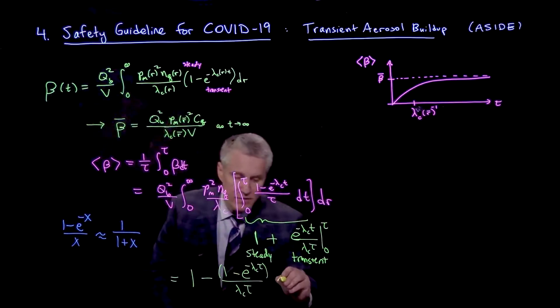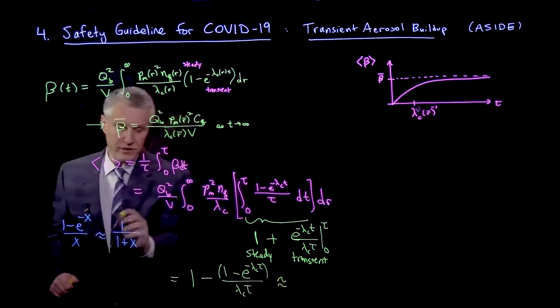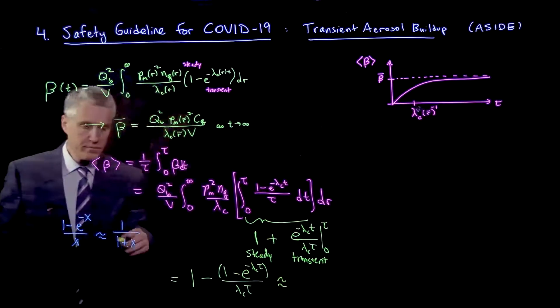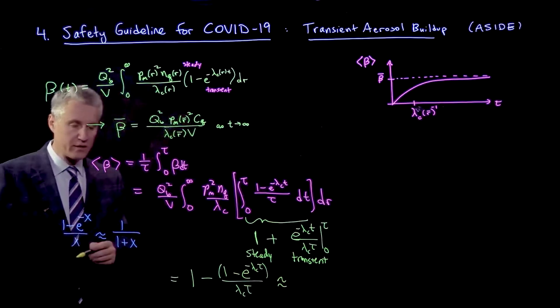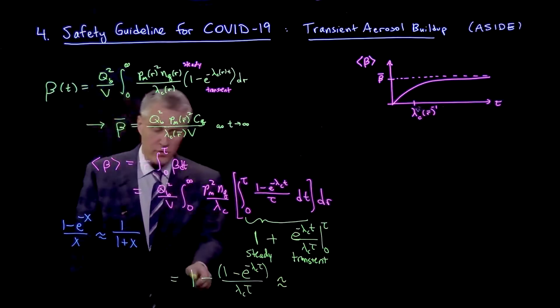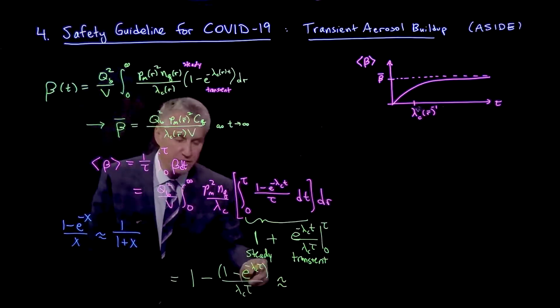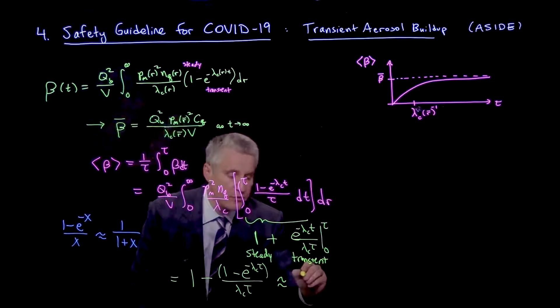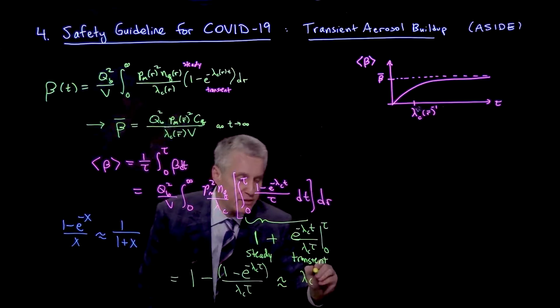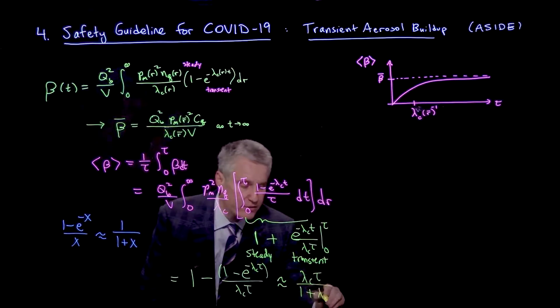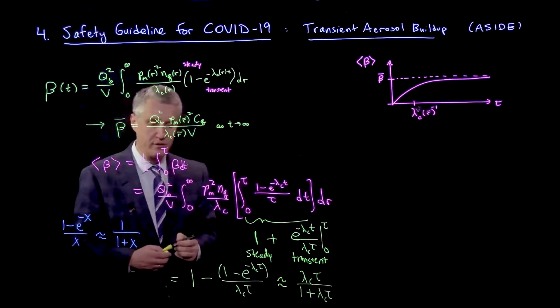Then what I have here is that this thing is 1 over 1 plus x here. And so we end up with 1 minus 1 over 1 plus lambda c tau. And when I combine those two terms, I end up with lambda c tau over 1 plus lambda c tau.